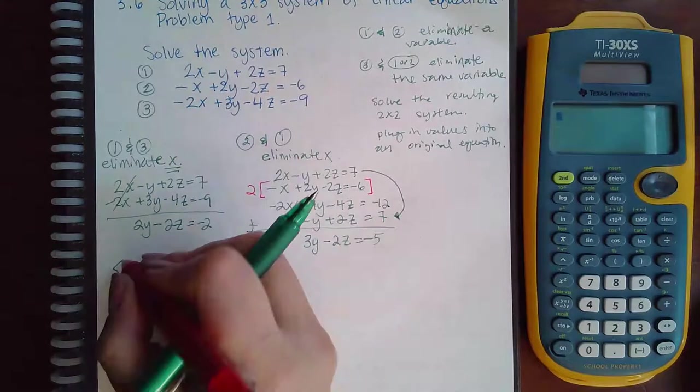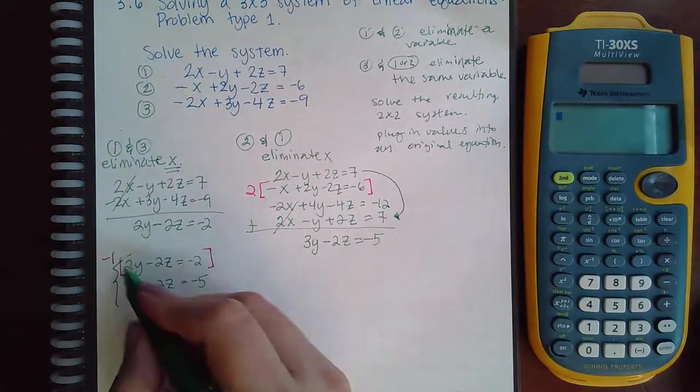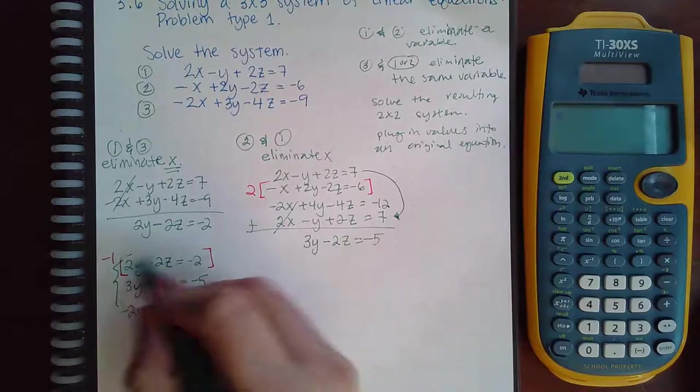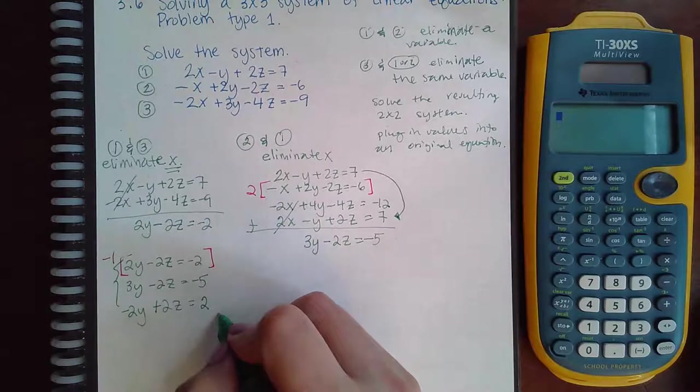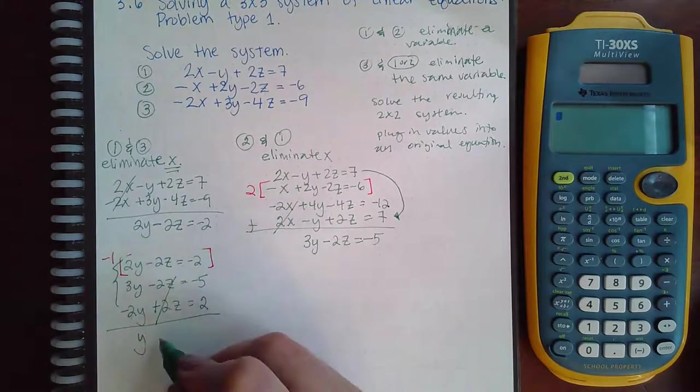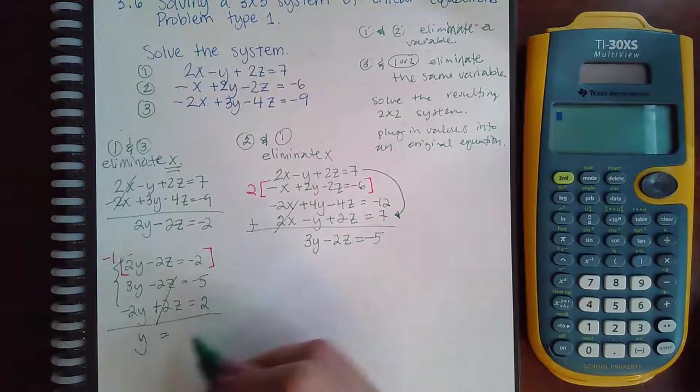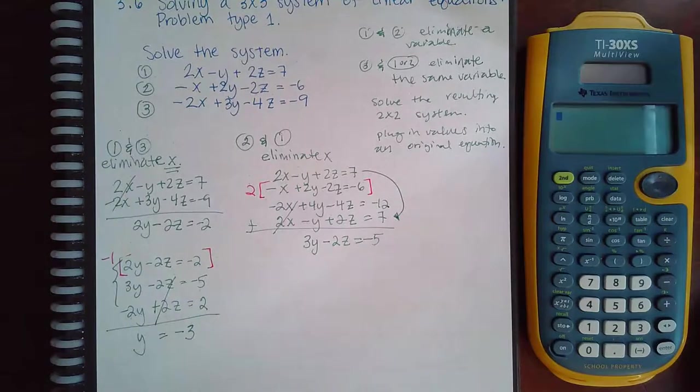So I'm going to take this top equation and multiply it by a negative 1, and I get negative 2y, I get a positive 2z, and then that becomes positive 2. So then 3y minus 2y is just 1y. The z's will cancel. Negative 5 plus a positive 2 is negative 3. So I now know the y value.